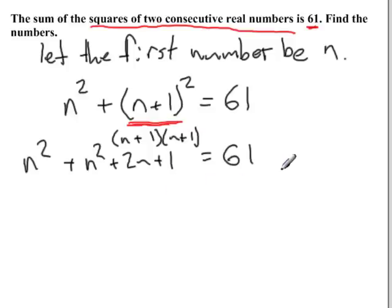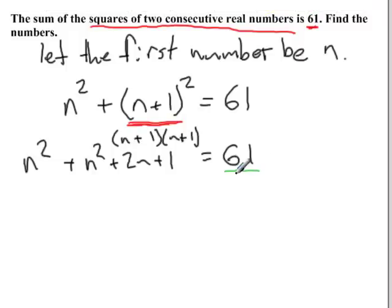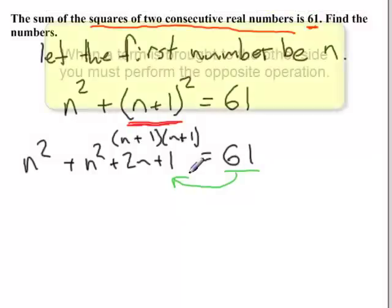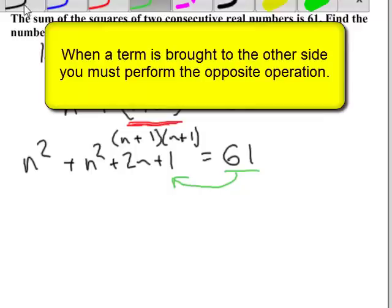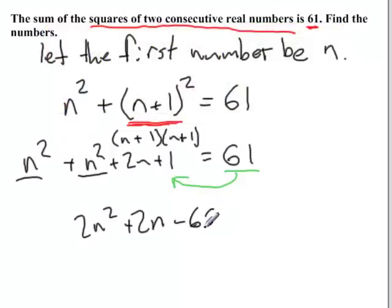Now my solutions are going to be my roots, so I have to let this function equal 0. So I need to move the 61 over to the other side. As I'm doing this, I'm going to collect like terms. I have 2n squared, so 2n squared, 2n, and then 1 minus 61, so minus 60. I'll let that equal to 0.